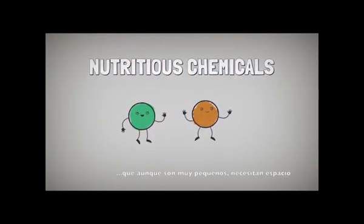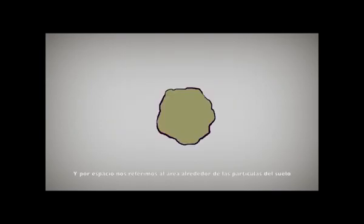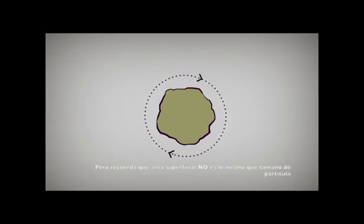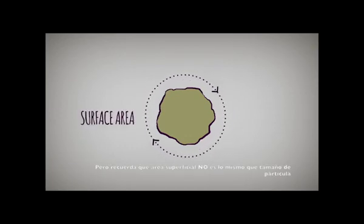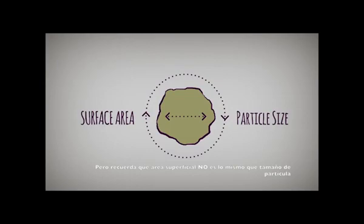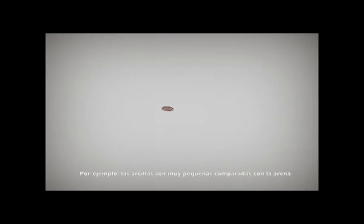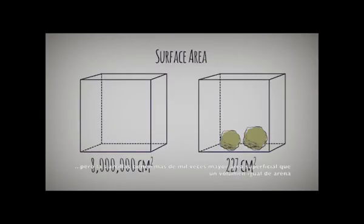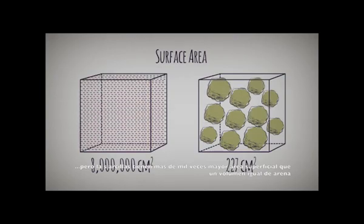Although incredibly small, nutrients still need their space — and by space, we mean the area surrounding the soil's tiny particles. Keep in mind that surface area is not the same as particle size. For example, clay particles are tiny compared to sand, but they have more than a thousand times as much external surface area as the particles in an equal volume of sand.